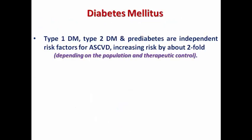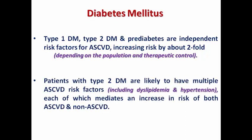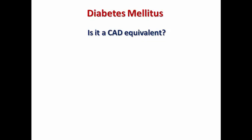Type 1 and type 2 diabetes, as well as prediabetes, are independent risk factors for atherosclerotic cardiovascular disease. They increase the risk approximately two-fold compared to non-diabetics, depending on the population and degree of therapeutic control. Patients with type 2 diabetes are likely to have multiple risk factors — they are usually not only diabetic but may also have dyslipidemia and hypertension — leading to a greater increase in the risk of both atherosclerotic and non-atherosclerotic cardiovascular disease.